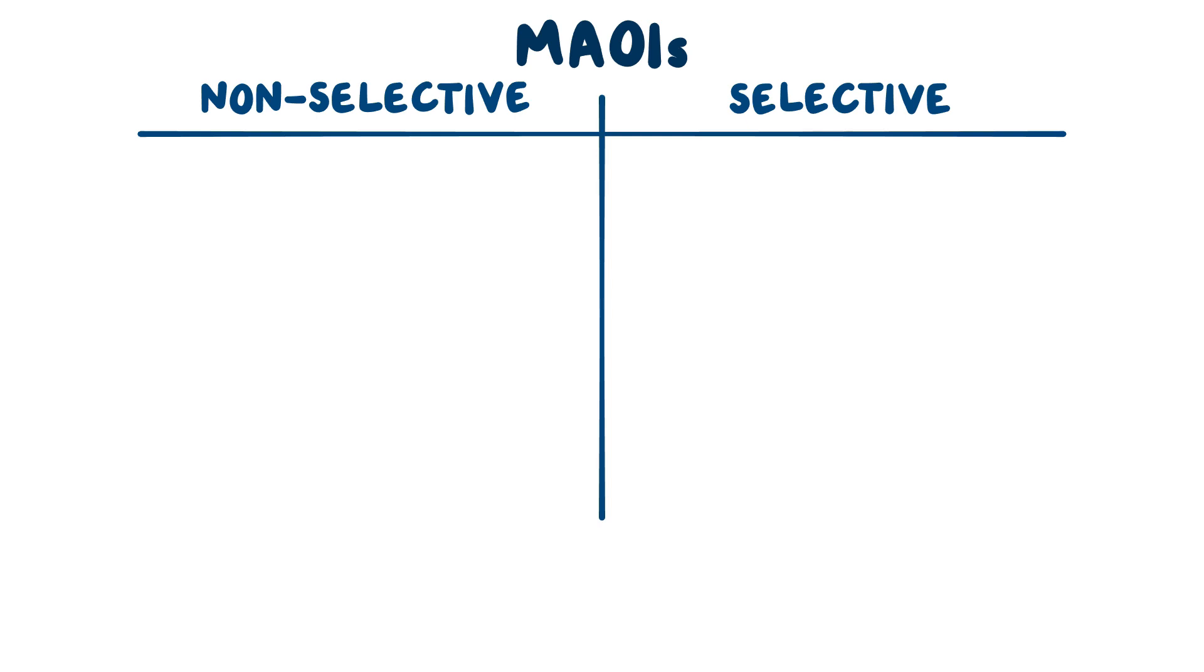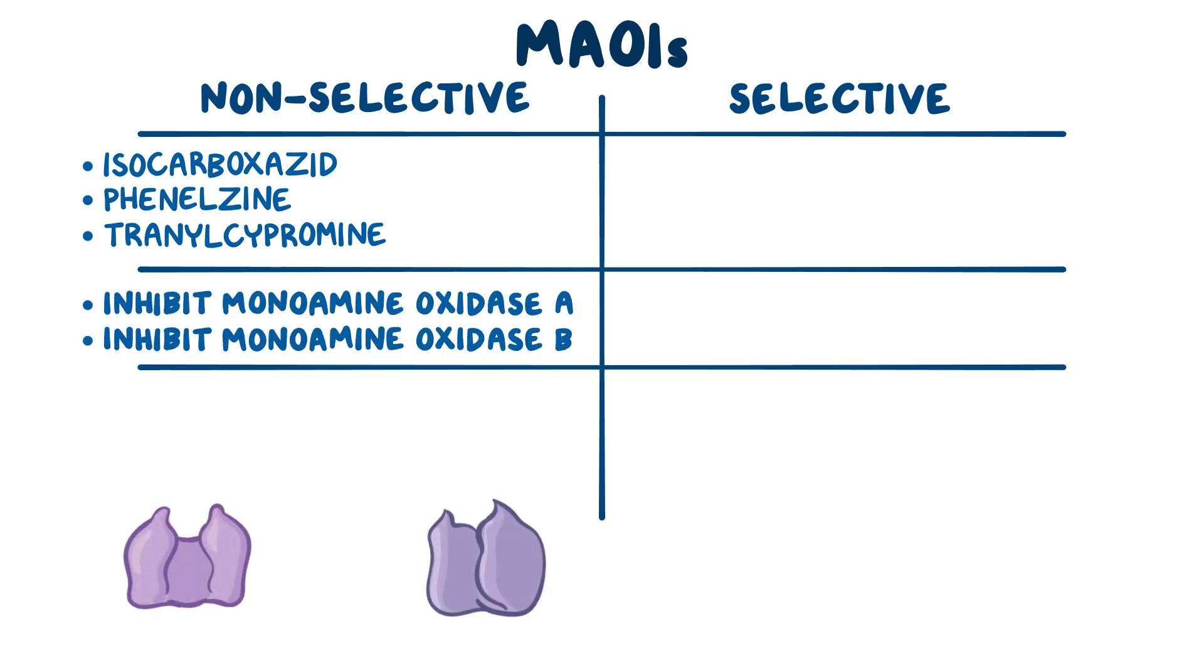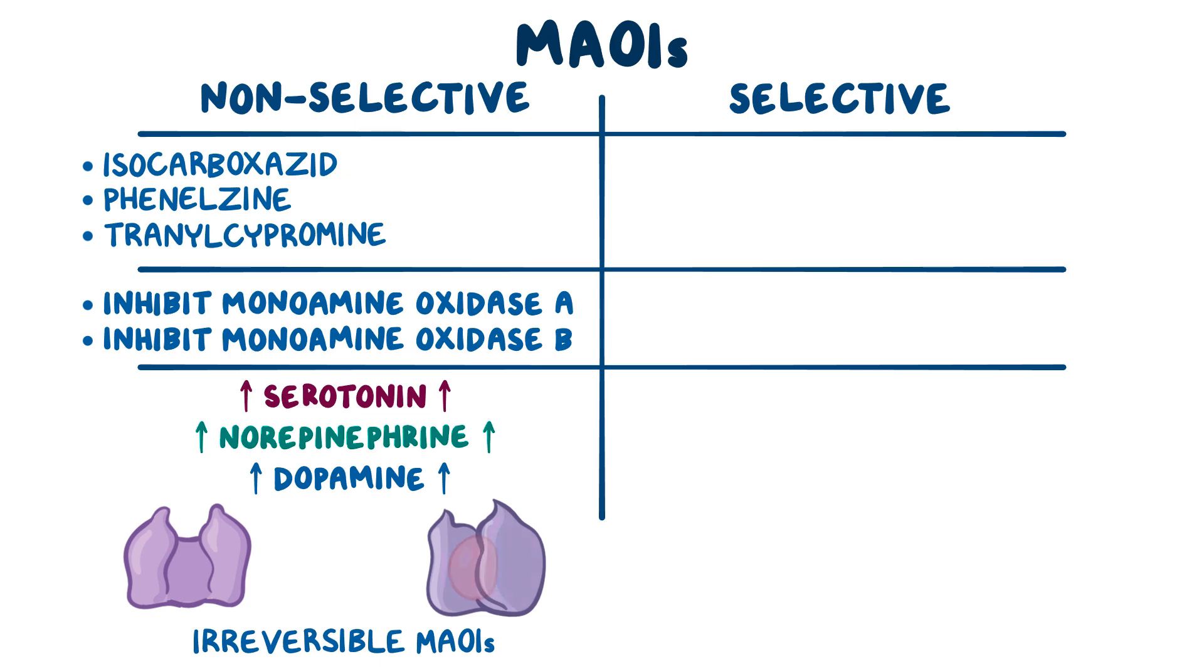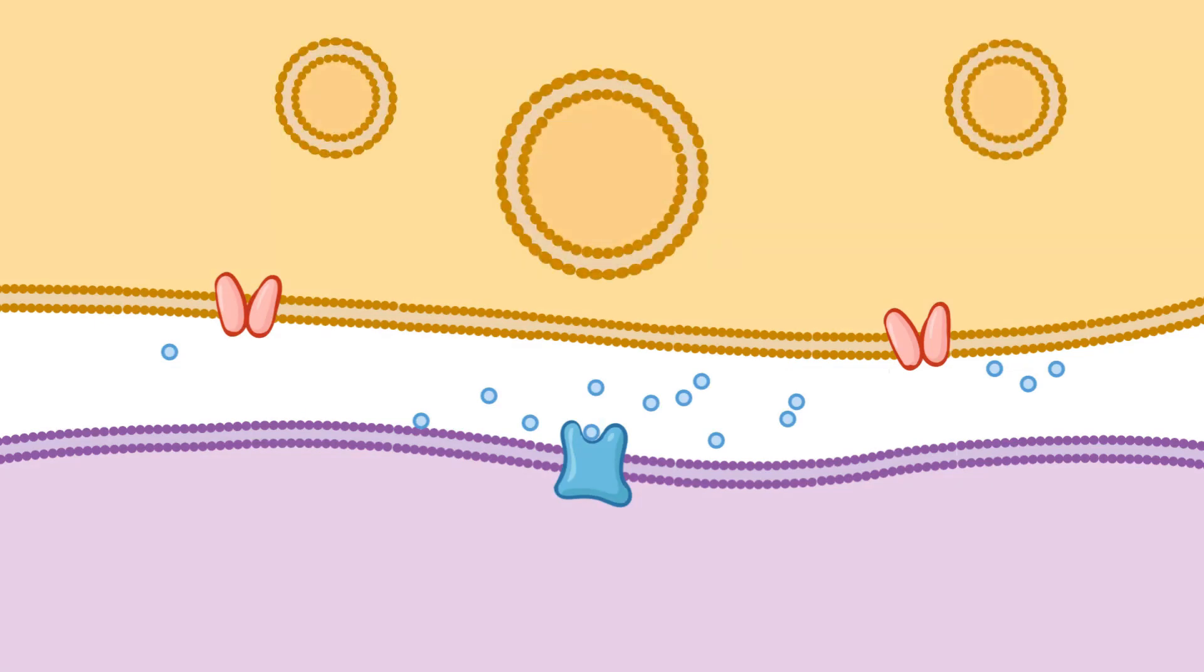MAOIs are subdivided into two types, non-selective and selective. Non-selective MAOIs, such as isocarboxazid, phenelzine, and tranylcypromine, inhibit monoamine oxidase A and monoamine oxidase B, so serotonin, norepinephrine, and dopamine levels will increase. These medications are also called irreversible MAOIs because they bind irreversibly to the enzymes, permanently blocking their function. Once these enzymes are inhibited, the monoamine neurotransmitters get packed into pre-existing vesicles.